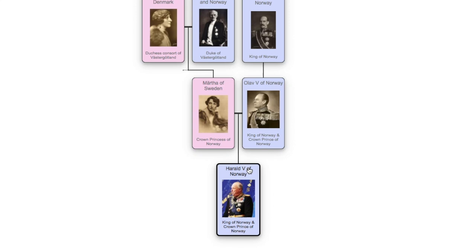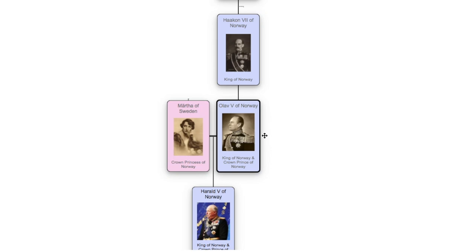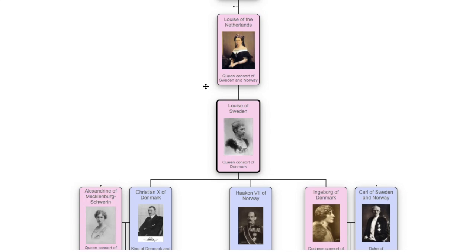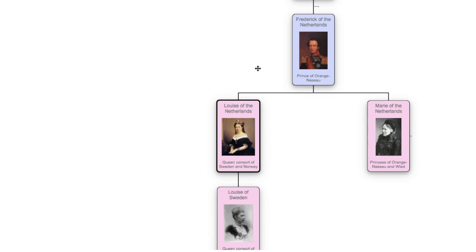Harald's father was King Olaf V of Norway, who reigned from 1957 to 1991. Olaf's father was Haakon VII of Norway, who was the first King of Norway from 1905 to 1957. Haakon was the son of Princess Louise of Sweden, Queen Consort of King Frederick VIII of Denmark. Her mother was also named Louise, being the Queen of Sweden and Norway as the spouse of King Charles XV.